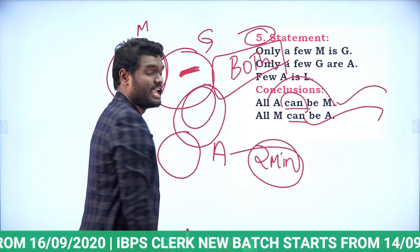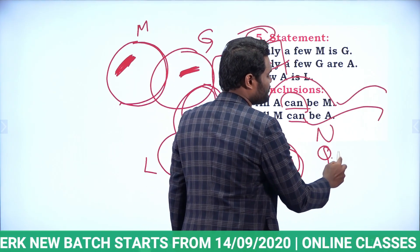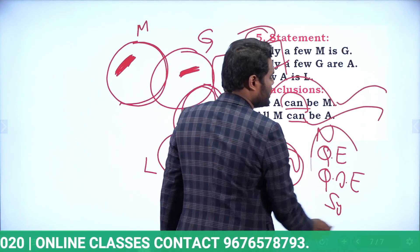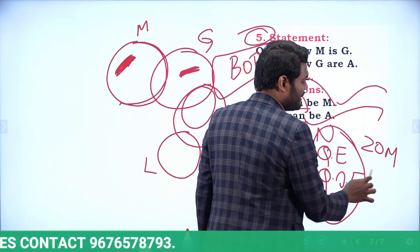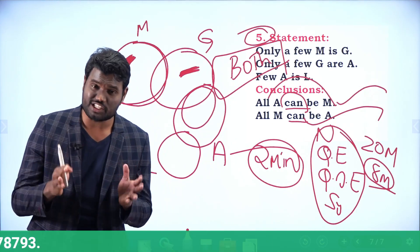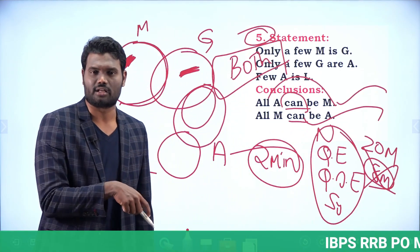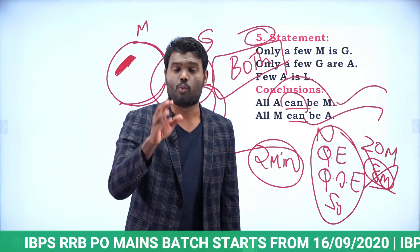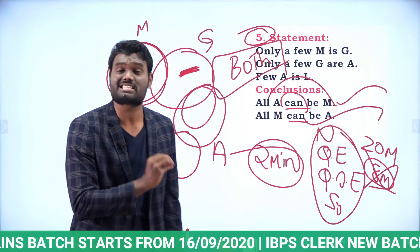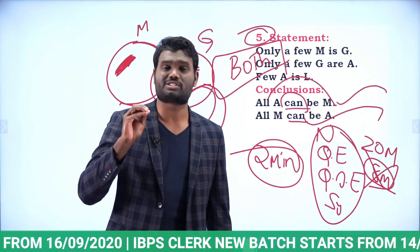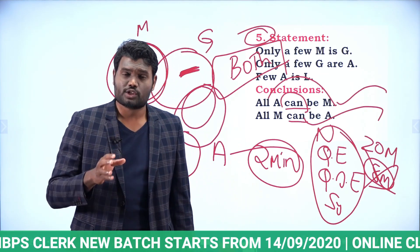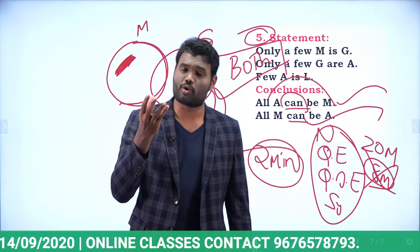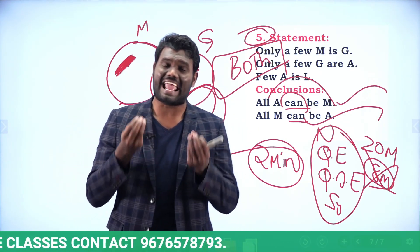We have now solved questions from number series, quadratic equations, coded inequalities, and syllogisms — all 20 marks in just about 8 minutes of time. If you're really fast you can do it in even less. The key is knowing the proper concept. We will solve the remaining exam questions in upcoming videos. Please share our videos with as many friends as possible.